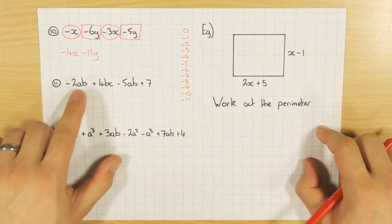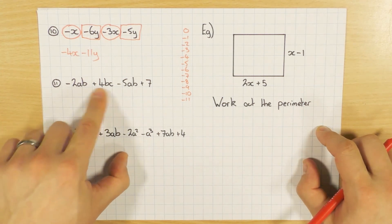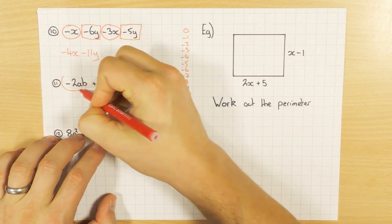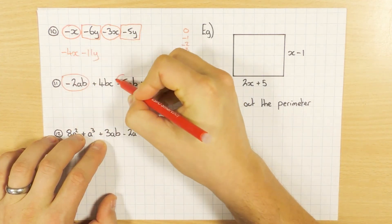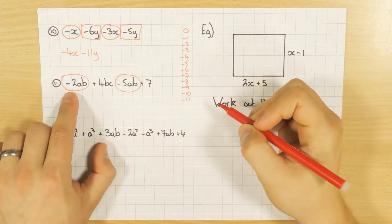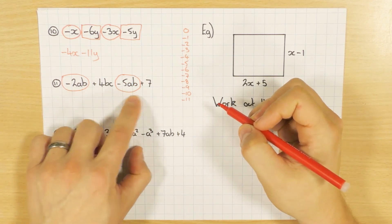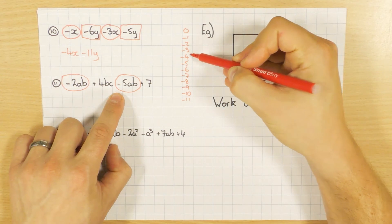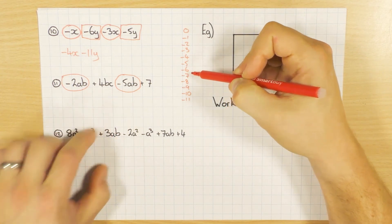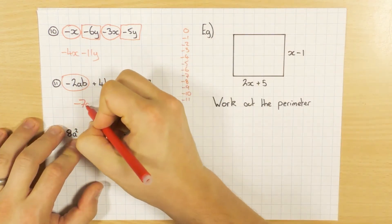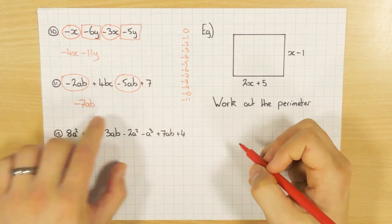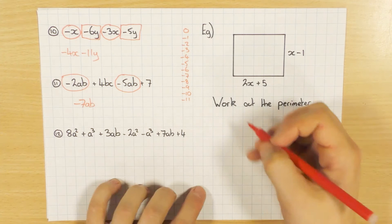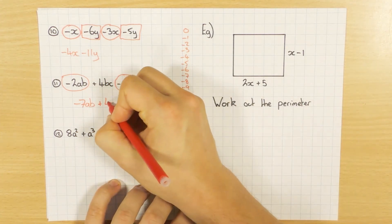This one here, let's have a look. I've got AB. That's a BC. So they're not the same. But I do have an AB there. So again, I can circle these because they're the same. I can simplify them. Minus 2AB, take away 5AB. So again, I'm going to my number line. Minus 2, take away 5. 1, 2, 3, 4, 5. Minus 7AB. That's a BC and that's just a number. Nothing similar there. No like terms. So I can't simplify them. So I just leave it.